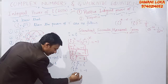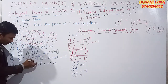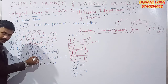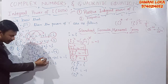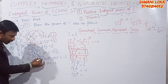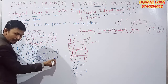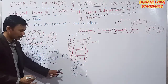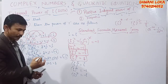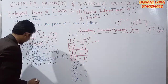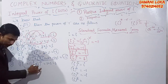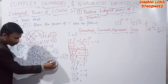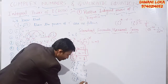For i to the power 7: write it as i to the power 4 into i cubed. i to the power 4 is 1, i cubed is minus i, so 1 into minus i equals minus i. Therefore i to the power 7 is minus i. For i to the power 8: write it as i to the power 4 into i to the power 4, which is 1 into 1, equals 1. Therefore i to the power 8 equals 1.